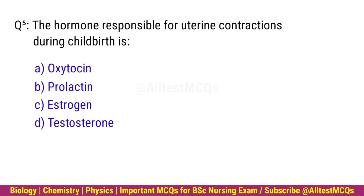Q5. The hormone responsible for uterine contractions during childbirth is? Correct option is A. Oxytocin.